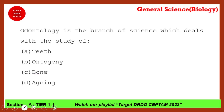This is a very important question: odontology is the branch of science which deals with which of the following? The options are teeth, ontogeny, bone, and aging. The correct answer is option A — teeth. Odontology is the study of teeth.